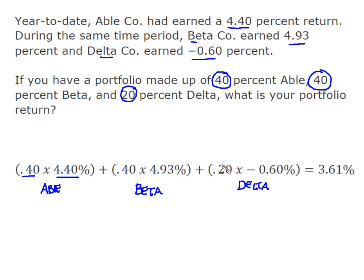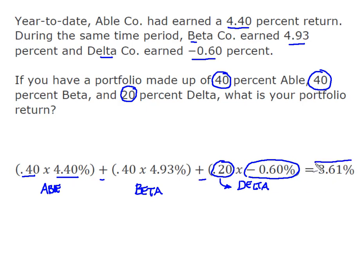I simply multiplied the weight, or percentage of my portfolio invested in that particular vehicle, times whatever my return was. I added all three of them up and came up with an overall portfolio return of 3.61%.